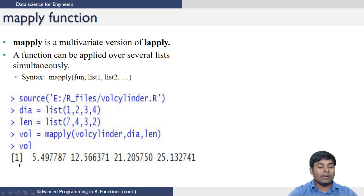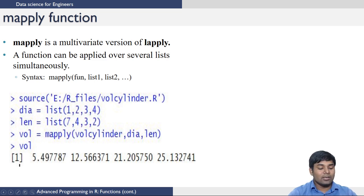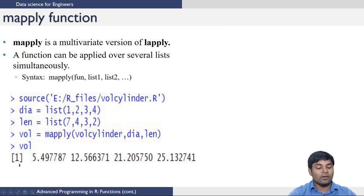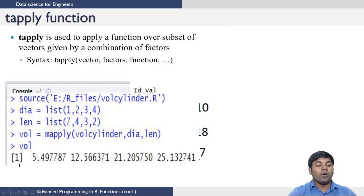We want to evaluate the volume for each individual pair of diameter and length. You could individually take each length and diameter and execute the function, but that is tedious. mapply simplifies this: create one variable volume and apply mapply on the cylinder function. Since the function comes first, then the two lists dia and length, mapply takes each pair and calculates the volume, returning volumes for all pairs in the two lists.